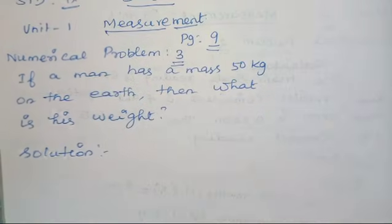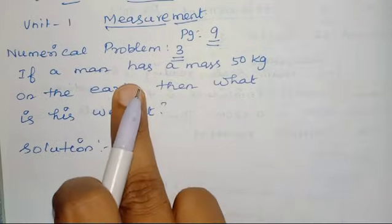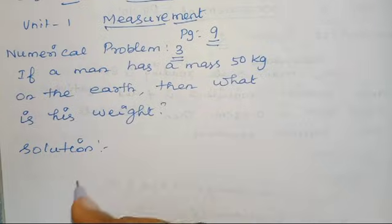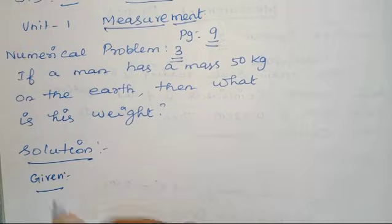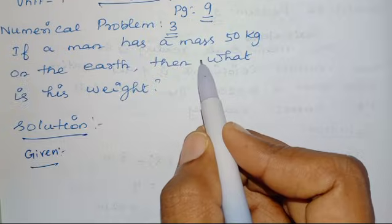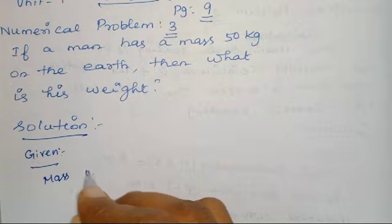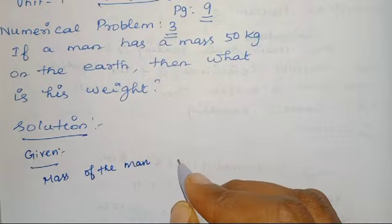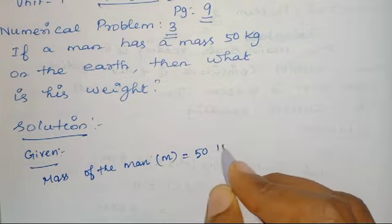Only simple question. Man would have weight. We have to calculate the weight. First, given. As we all know, given - what are the values that are given? Mass. The man would have mass. I can write here: mass of the man, which we can denote by the letter m, is equal to 50 kg. Clear?